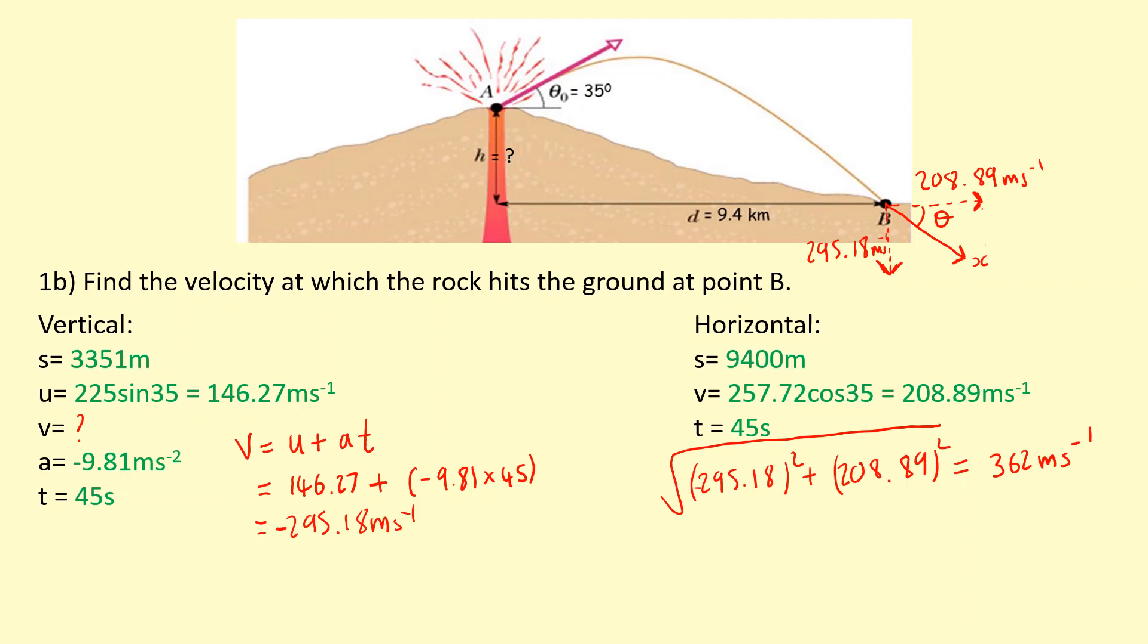If we want the angle, we're going to use trigonometry. We have the opposite and the adjacent, so we're going to use tan theta, which equals opposite over adjacent. The opposite side from the angle I've labeled is 295.18 and the adjacent is 208.89. If you work that fraction out you get 1.4131.